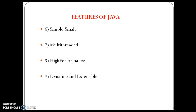The next feature is high performance. Java runs slower due to the conversion of bytecode into executable code called binary code, and this conversion takes some time. To improve this, Java has a concept called JIT, which is a Just-In-Time compiler, which improves the execution time of Java applications. We will see more detail about JIT in coming tutorials.